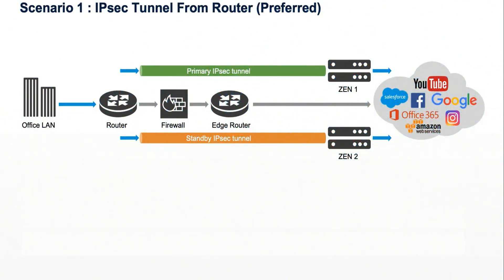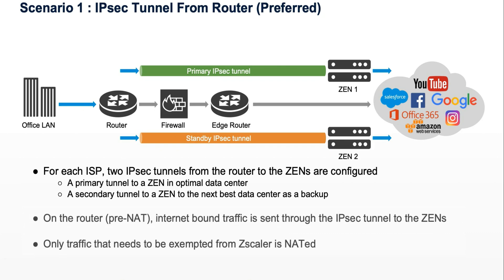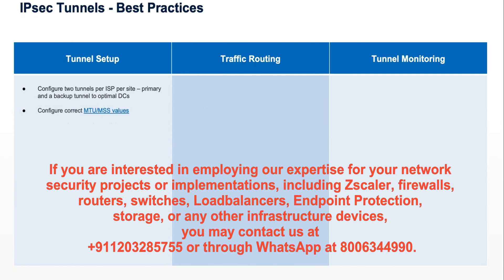IPSec is also an option where GRE is not supported on any router. You are going to create IPSec tunnels from the router inside your firewall or inside your edge router, creating the connection to the Zero Trust Exchange — a primary and a secondary. Do not NAT the traffic as it flows into the router and through the tunnel to the Zscaler enforcement node, or ZPA private or public service edge, similar to GRE. Create two tunnels.